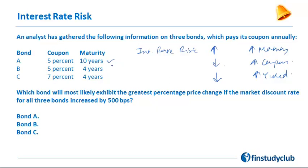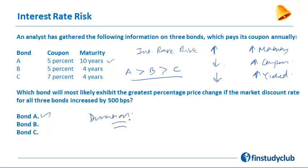Here we have three bonds. Bond A has the highest maturity. Comparing A and B — both have the same coupon but bond A has greater maturity — so A has greater interest rate risk than B. Comparing B and C — same maturity but C has a greater coupon — so B has greater interest rate risk than C. Therefore bond A will be most sensitive to interest rate changes. Interest rate risk is measured by duration, which is extremely important to know how to compute.